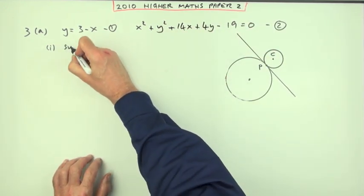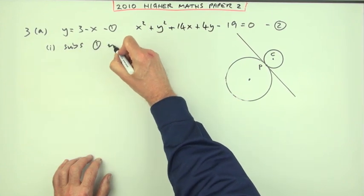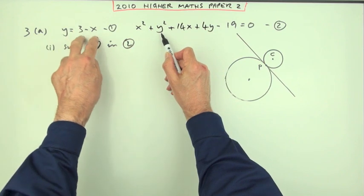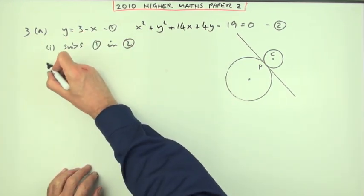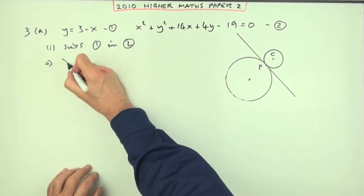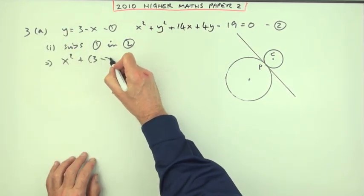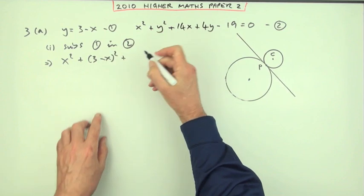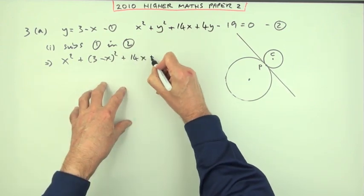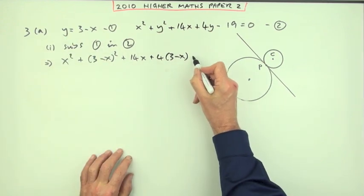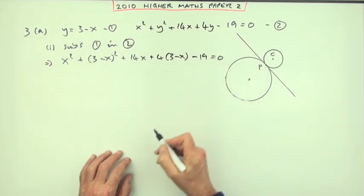So I'm going to substitute. Substitute 1 in 2. Meaning, wherever I see y, I'll replace it with a substitution 3 minus x. So what have we got? Well that's x squared. y, 3 minus x there. 14x plus 4y, 3 minus x. Minus 19 should equal 0.